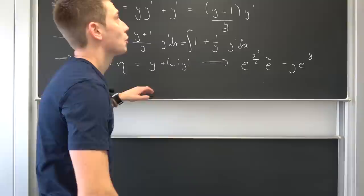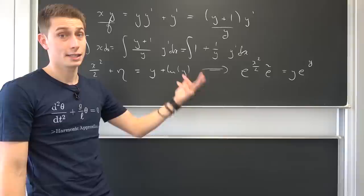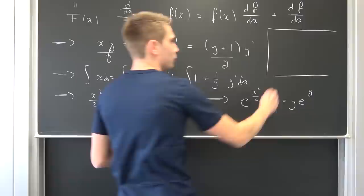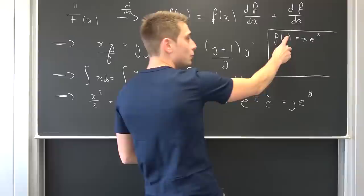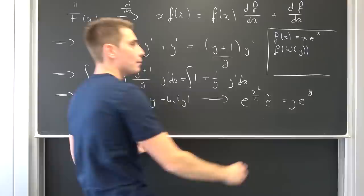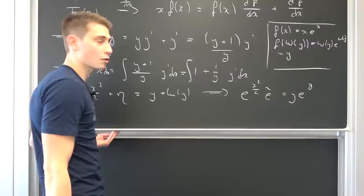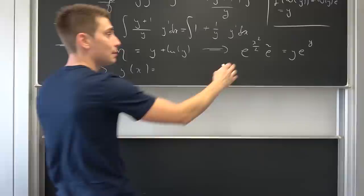To find a solution for y with respect to x, we have to separate for y, bringing y to one side: y of x equals something. We are going to make use of the Lambert W function, which I've introduced before. If we have a function f of x equal to x times e to the x — or y times e to the y — then we can use the inverse function, the Lambert W function. Applying it to both sides, since Lambert W is the inverse, we end up with the argument itself: y of x equals Lambert W of e to the x squared over 2 times e_snag.